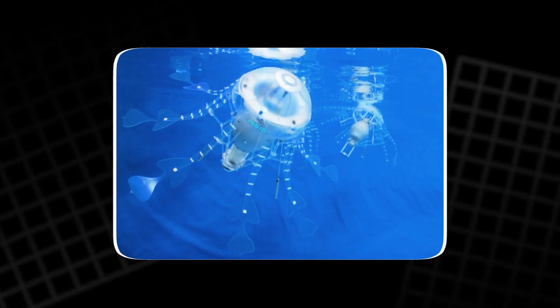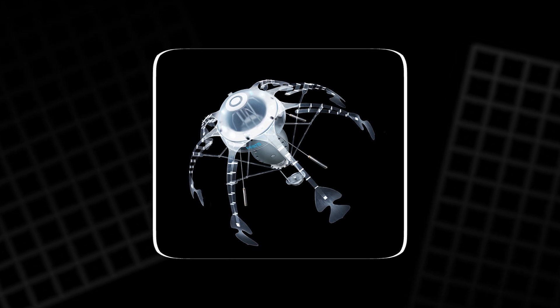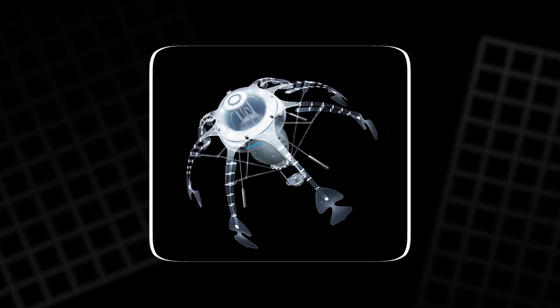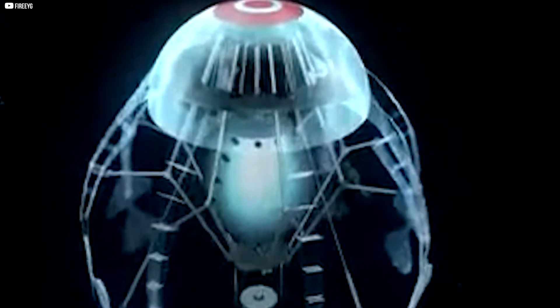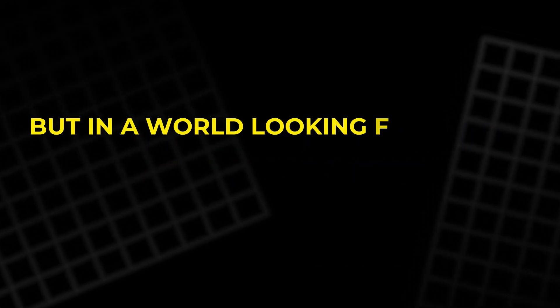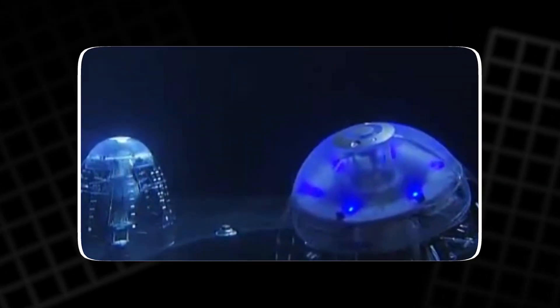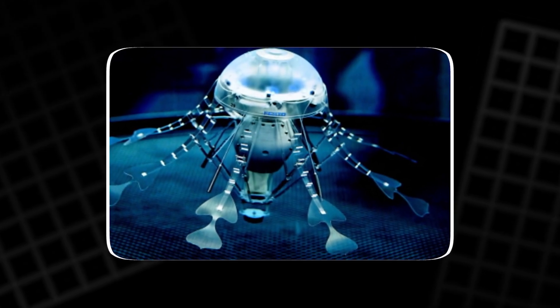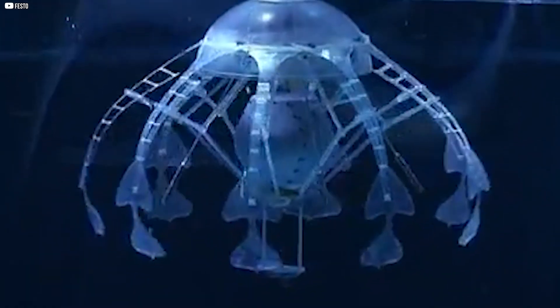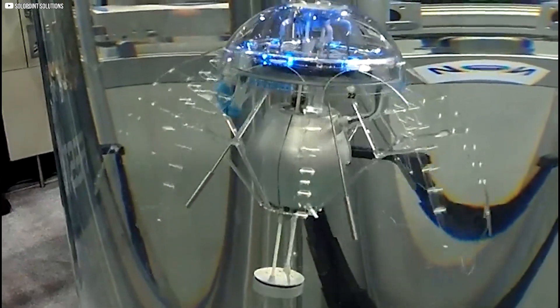It's not fast, but that's not the point. Aqua jelly is designed for efficiency and teamwork. Each unit uses sensors to avoid collisions and swims in groups. In the future, swarms of these could monitor water systems, collecting environmental data with minimal energy. They might not carry cargo or race across oceans, but in a world looking for subtle, low-impact solutions, they make perfect sense. And visually, they're mesmerizing. Watching them move feels less like robotics and more like witnessing a new form of underwater life. This isn't just engineering. It's the merging of machines with the rhythm of biology.